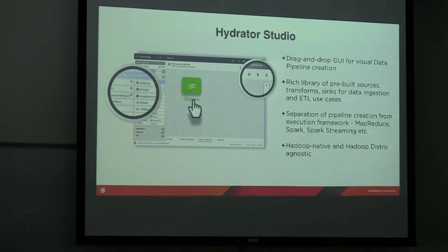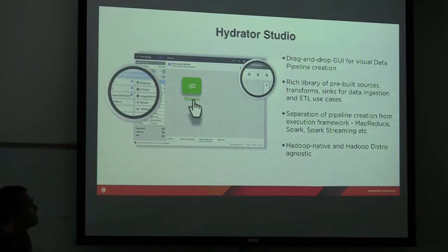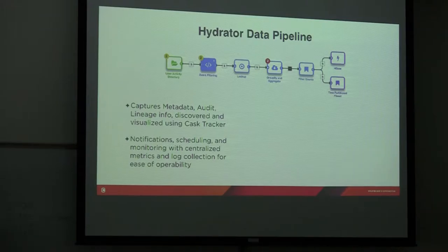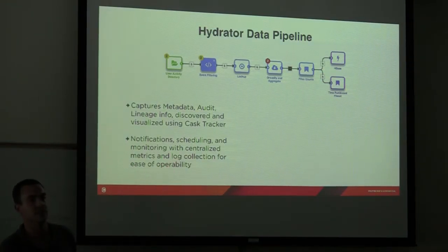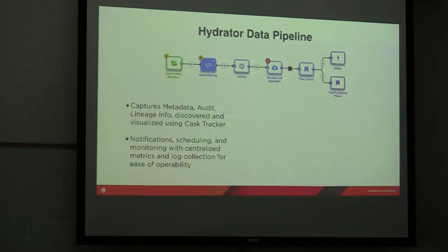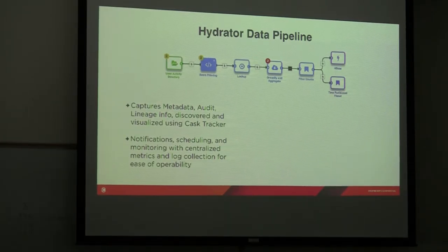Hydrator is built around the Studio, a drag-and-drop UI. Data pipelines look like a DAG. Part of what Hydrator does automatically is capture all the metadata, audits, and lineage information about these pipelines. So if I have a user activity directory, an HBase table, and a time-partitioned file set, I'll see lineage back to that source — the framework does that automatically. You also get scheduling, centralized monitoring, metrics, and log collection, making these pipelines very easy to operate.